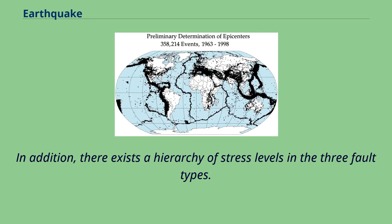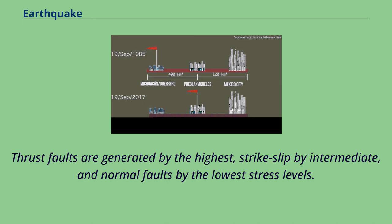In addition, there exists a hierarchy of stress levels in the three fault types. Thrust faults are generated by the highest stress levels, strike-slip by intermediate, and normal faults by the lowest stress levels.